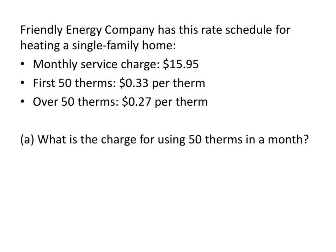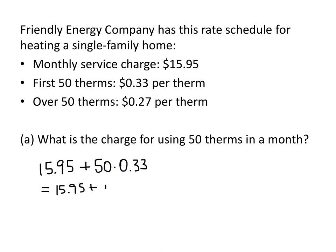For Part A, we're asked: what is the charge for using 50 therms in a month? We know we're going to pay that $15.95 for sure. And then, since we're using 50 therms, we fall into the category of those first 50 therms. So each of those 50 therms costs $0.33, meaning the per-therm charge is 50 times $0.33, which works out to $16.50. When we add those numbers together, our total bill turns out to be $32.45.